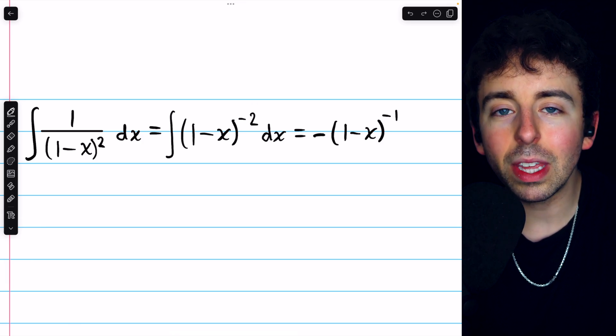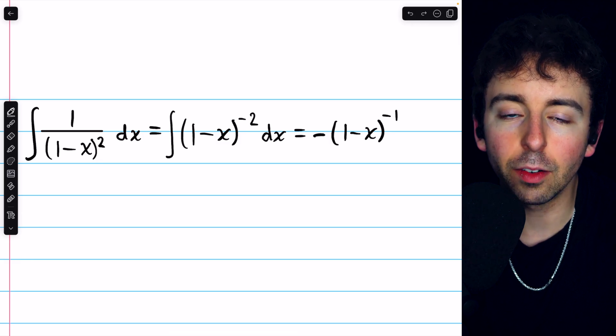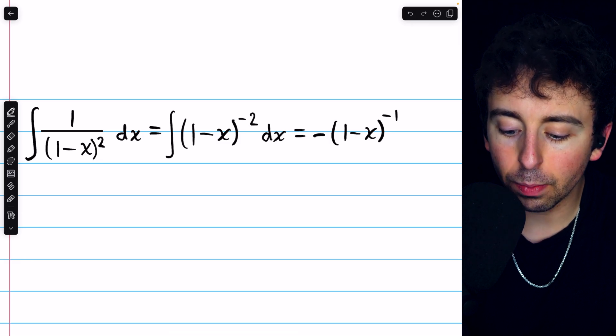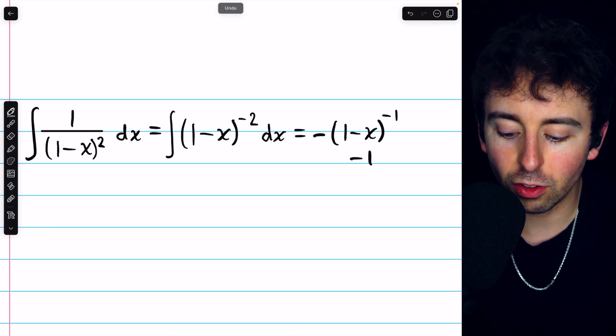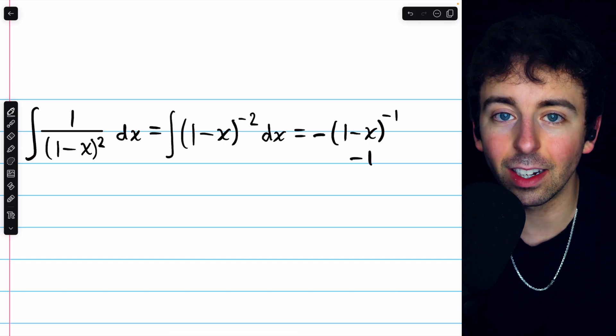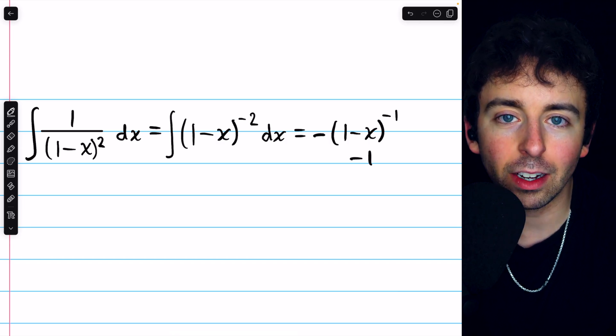But then we would also get another factor of negative 1 by the chain rule, because we'd have to multiply by the derivative of that inside function. The derivative of this inside function is just that coefficient of x, negative 1. So we would get an additional negative factor.